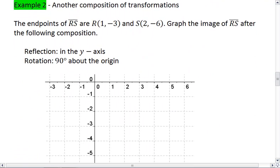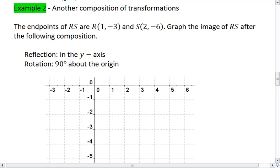All right, here's another example. This is another composition of transformations. This one's not a glide reflection, but it's still a composition because we see multiple transformations happening here. You're told that the endpoints of RS are R at 1, negative 3, and S at 2, negative 6. I want you to graph the image of RS after the following composition.